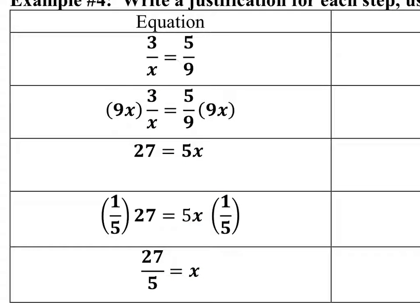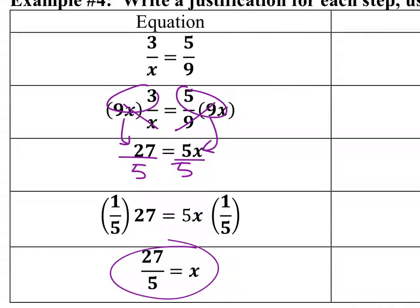And then finally, this other method. Again, it's just reciprocated. But if we multiply both sides by nine x, then these x's cancel. Nine times three is 27, and then the nines cancel, leaving us with the five x. Then, of course, we'll divide both sides by five, giving us 27 fifths.